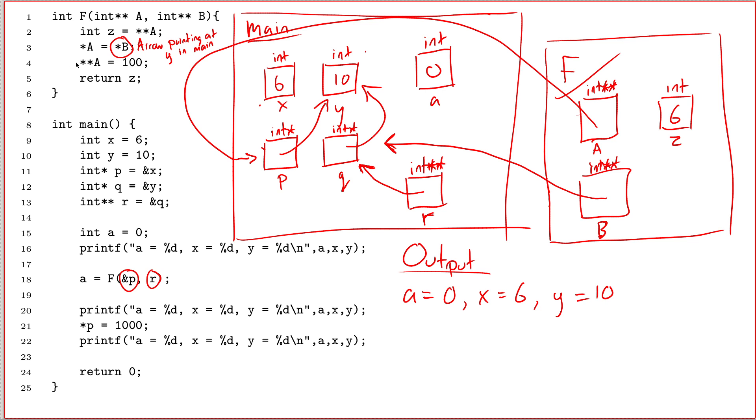Next line. Line number four. Star star a equals 100. So I'll just get rid of this. So I know that the right-hand side is just the number 100. That's not going to be the hard part. I take the value 100, and I assign it to wherever I end up. If I start at a, follow an arrow, and then follow an arrow. So inside of f, this is a. I start at a, I follow an arrow, and then I follow an arrow. And that takes me here. So I set this to have the value 100.